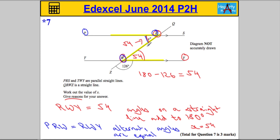There are many other ways to approach this question. This angle here is also 54 because it sits on a straight line, and we could say this angle equals x because they are corresponding angles. Another possible method: the vertically opposite angle here is 126, then 180 take away 126 gives 54 again. Also, these two angles are co-interior angles, which add up to 180 — if one is 126, the other must be 54. So there are various solutions you could have used — three of them.